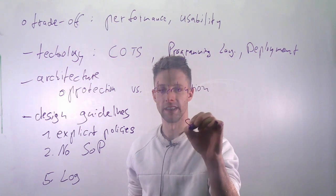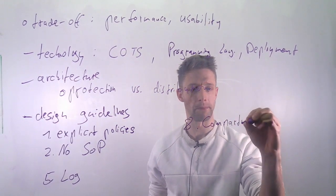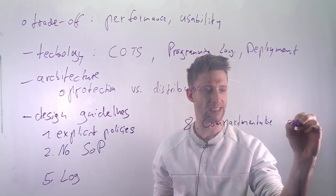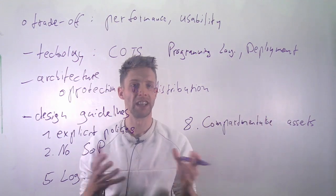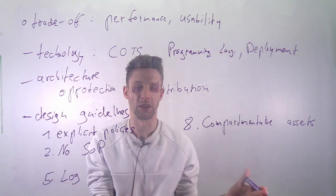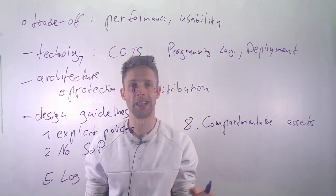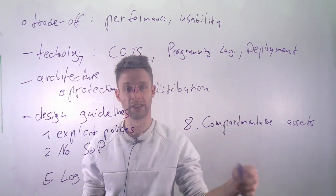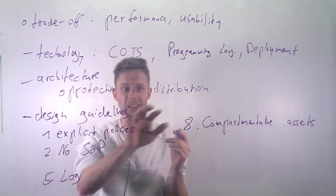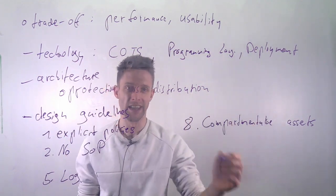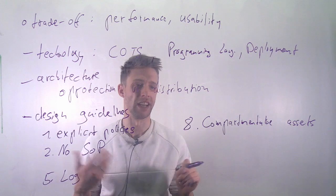Another concept — number eight on the list — is to compartmentalize your assets. This means you shouldn't have all assets in one place, because exposure then has severe consequences. Using the patient records example again: if you separate names from records, a successful attack doesn't yield the full picture — an attacker needs all the distributed data to get real value from the intrusion. Compartmentalization helps limit the damage.